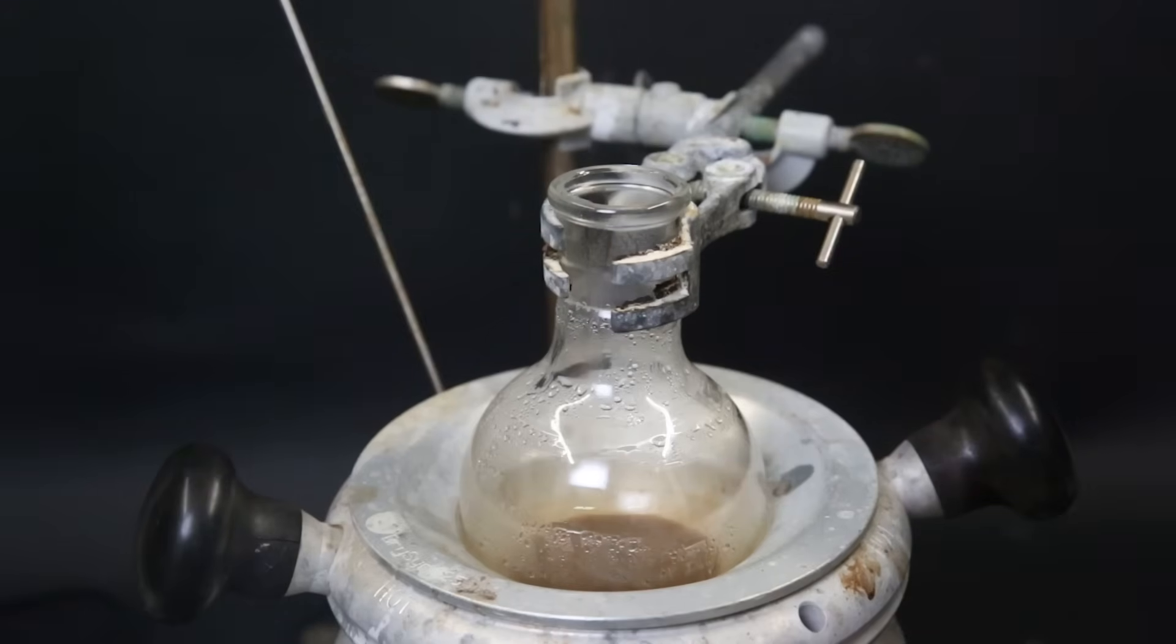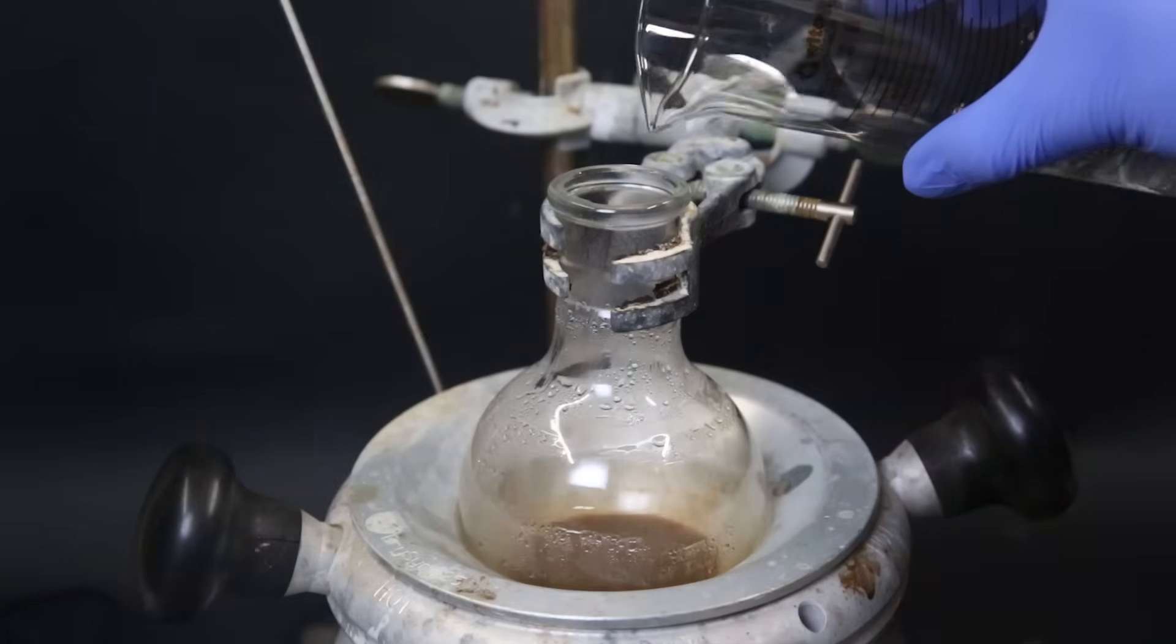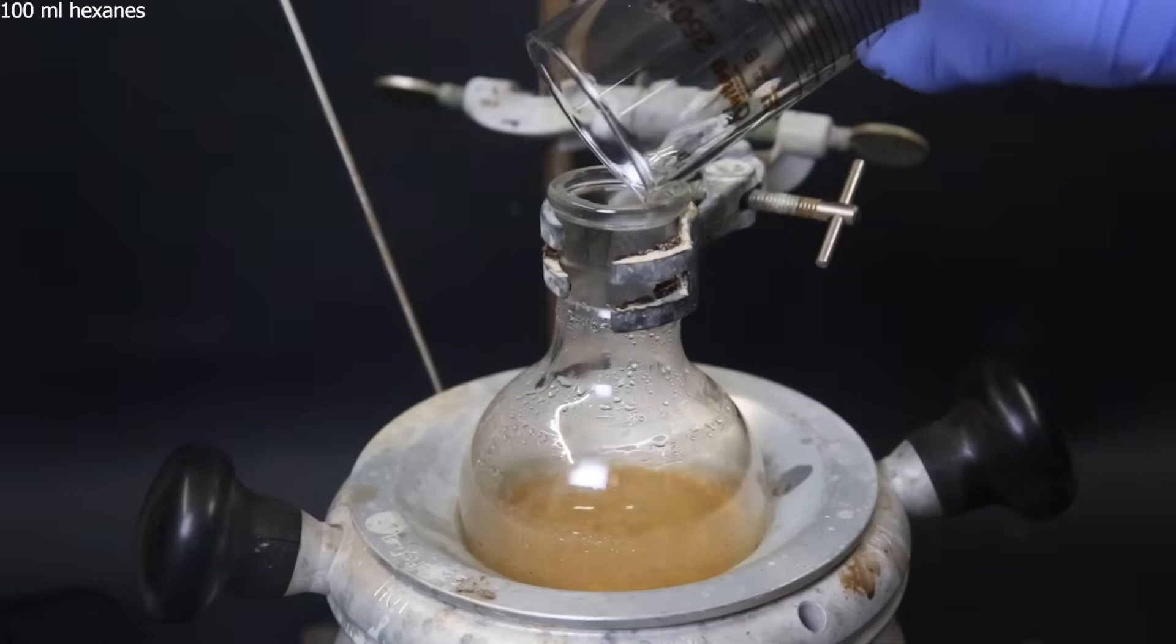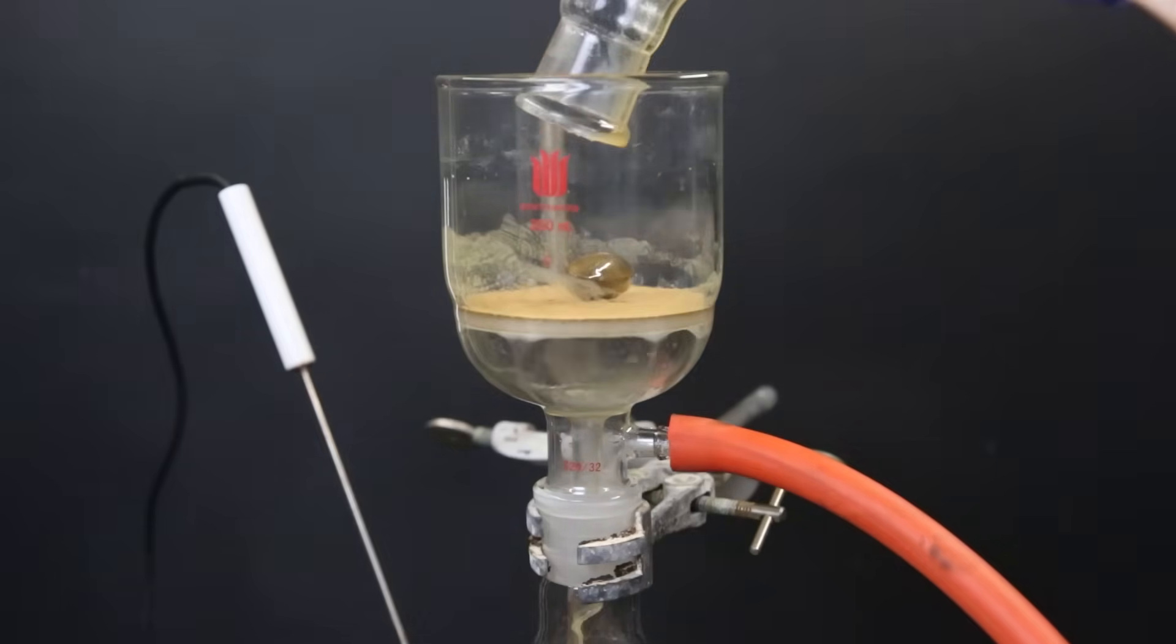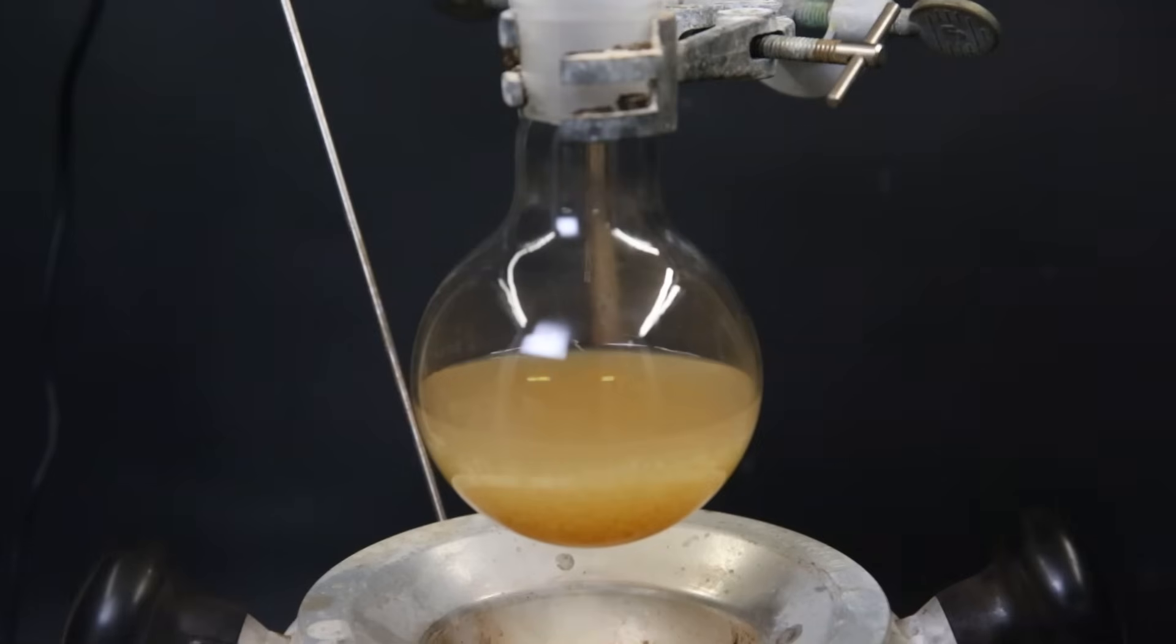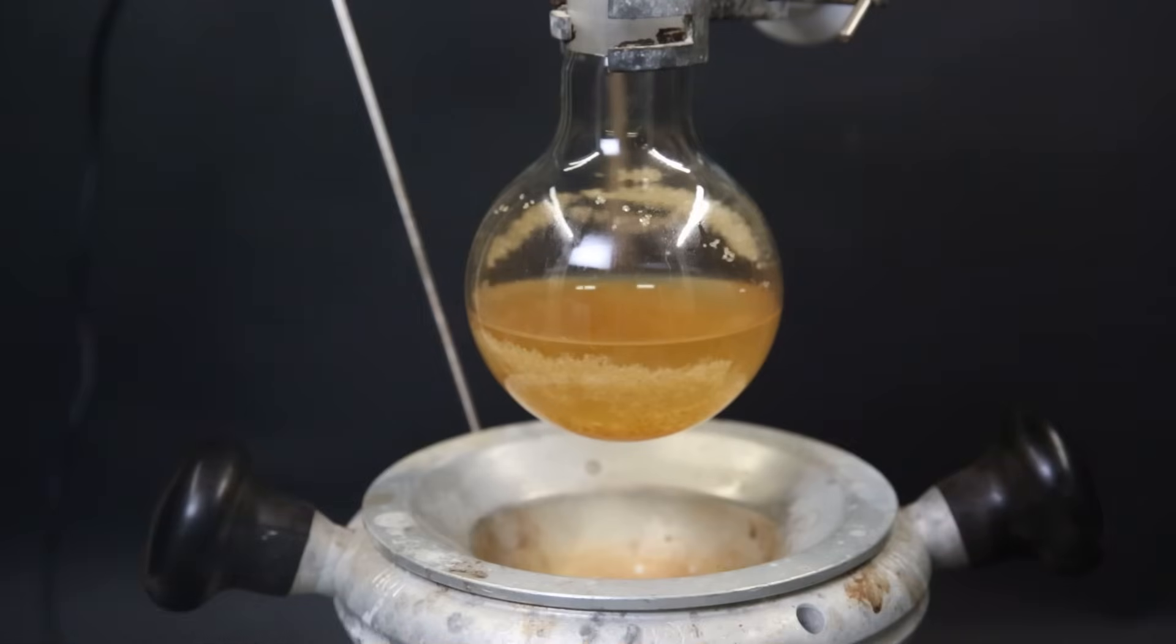This mixture contains a nickel complex of bipyridine. So to remove most of it, I add 100 ml of hexanes in which it is less soluble. I filter it through a glass fritted filter and wash it with a small bit of hexanes. Now I am left with a yellow orange solution, in which some solid is starting to crystallize out.